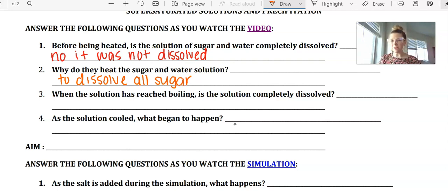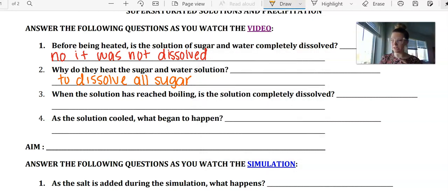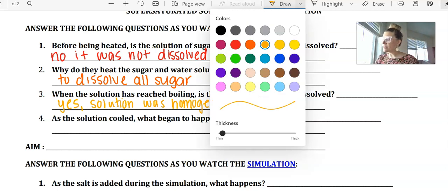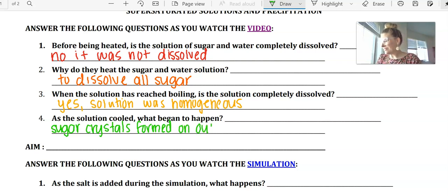When the solution reached its boiling point, was the solution completely dissolved? If you listened carefully, he did state that, yes, we will heat it until it's completely dissolved. So, yes, the solution was homogenous when they were boiling it. And then lastly, as the solution cooled, in that time lapse video, you saw that as the solution cooled, what began to happen? We saw that those sugar crystals formed on our stick or on the stick.